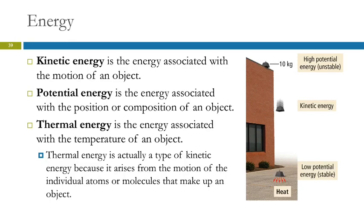So there are different types of energy. The two broad categories are kinetic energy and potential energy. Kinetic energy is the energy associated with motion. If something is moving, it has kinetic energy. Potential energy is associated with either the position of the object or the composition of the object.